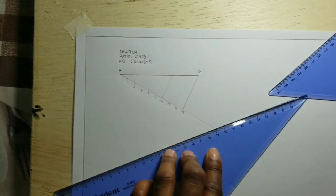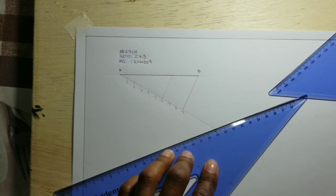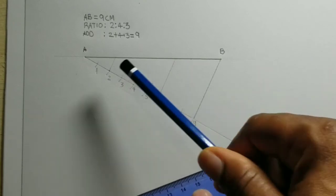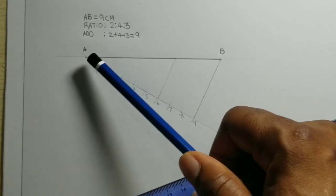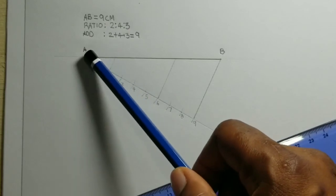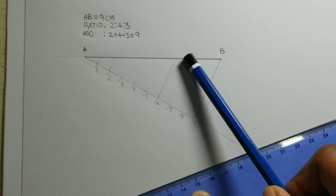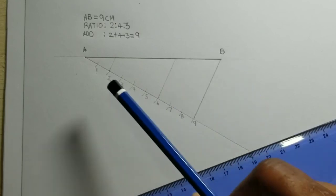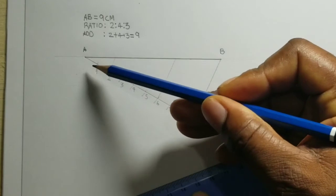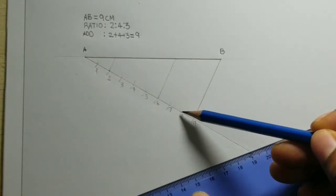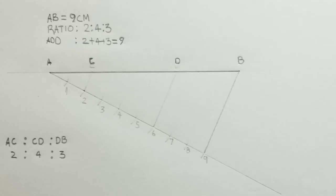I'll now be zooming in for you to be better able to see. Now what we have just done is that we have divided our line AB into a ratio of two to four to three. Two, we use two on this line, then one, two, three, four, and then one, two, three. Now this is how we divide a line into a given ratio.